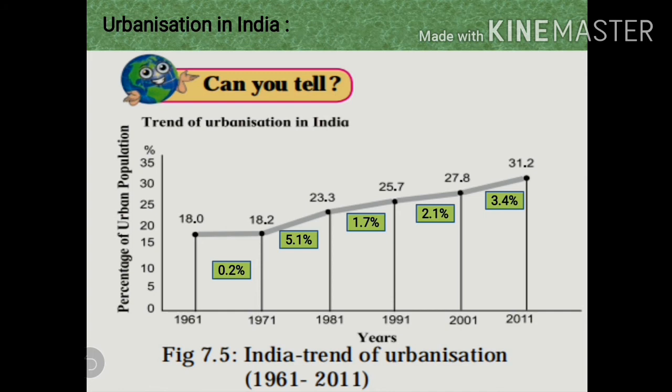A few questions are given in your textbook on page number 48. The first question is: what is the percentage of urbanization in the year 1961? As you see from the graph, in the year 1961 the percentage of urbanization was 18%.